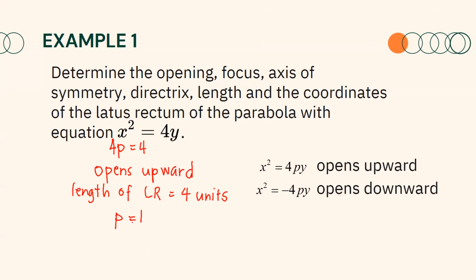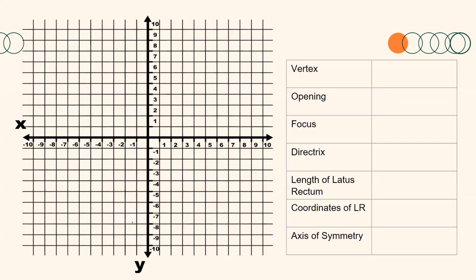Let us have an illustration to easily determine the elements of the graph of the parabola. We have determined that the vertex of the parabola is at the origin and it opens upward. Also, since 4p equals 4 and p equals 1, the focus and the directrix are 1 unit away from the vertex. Our vertex is at the origin, 0, 0.